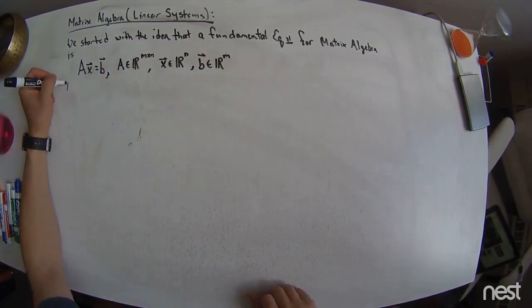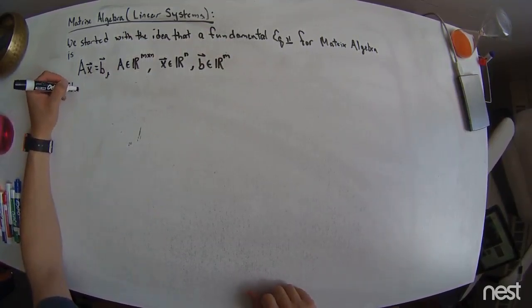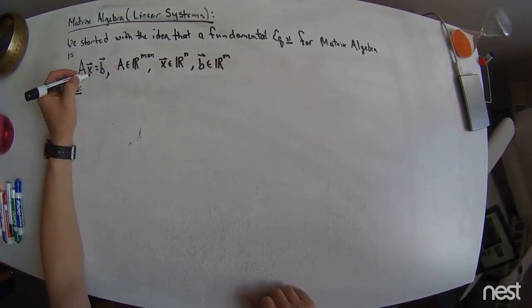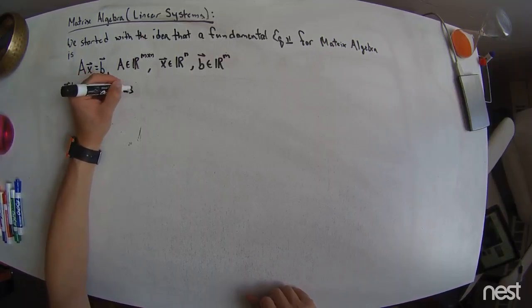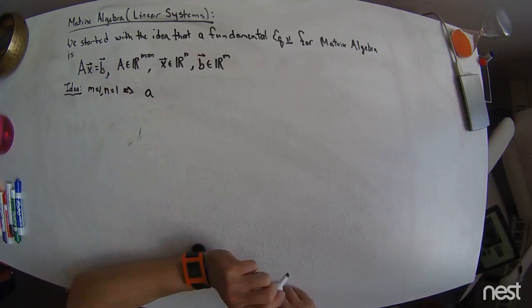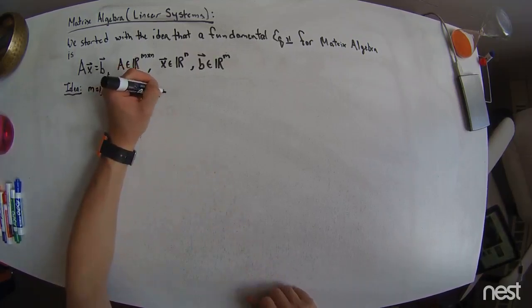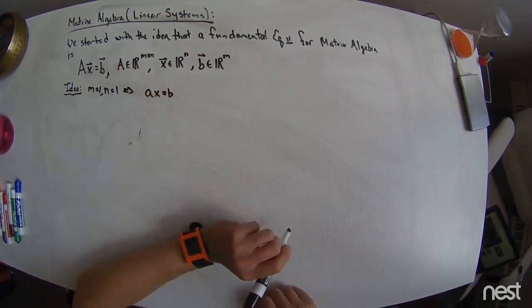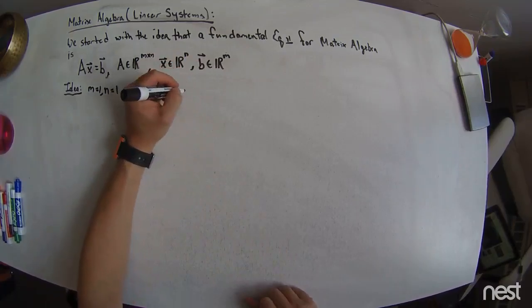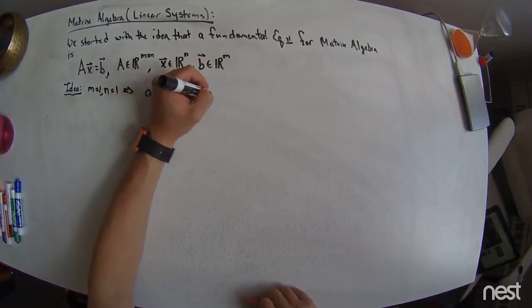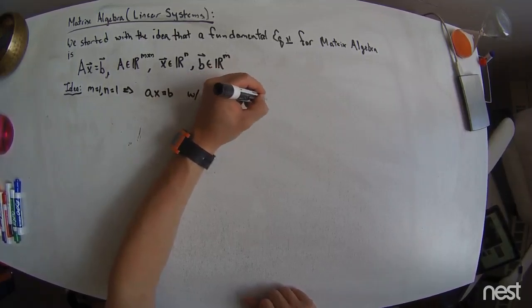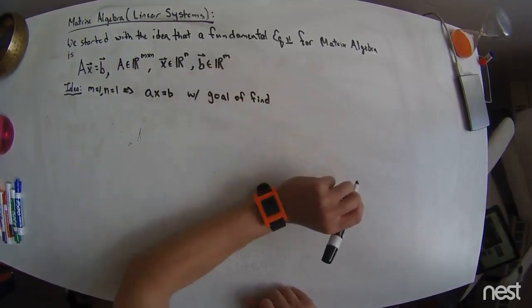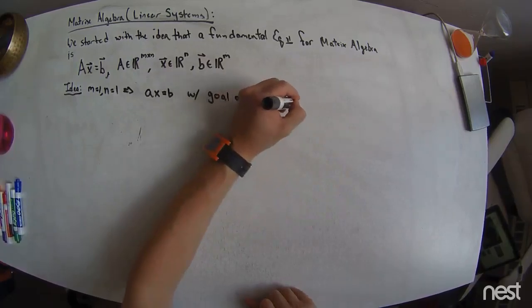Okay, this is too complicated. We just started. Let's take the following idea. Let's say m equals 1, n equals 1. Then we have the little a, which is a scalar, right, times x equals b.